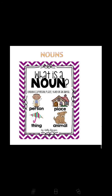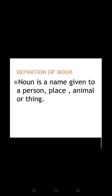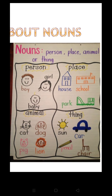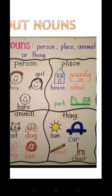So broadly we have classified nouns into four parts. You can have a look at the definition: a noun is a name given to a person, place, animal, or thing. When we talk about a noun as a person, it can be a boy, girl, baby, doctor, mother, father, sister, daughter, nurse, and so on. When we talk about a noun as a place, it can be a house, school, park, any building, beach, hospital, church, temple, mosque, and so on.